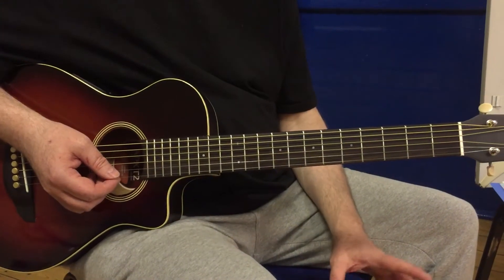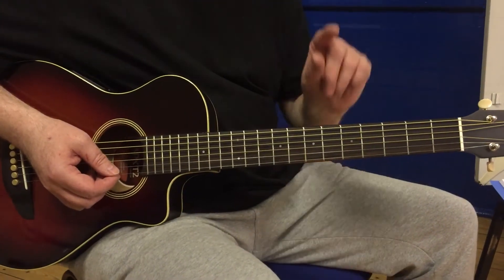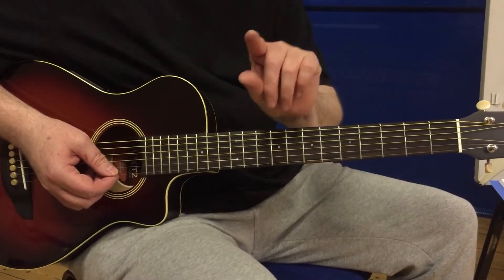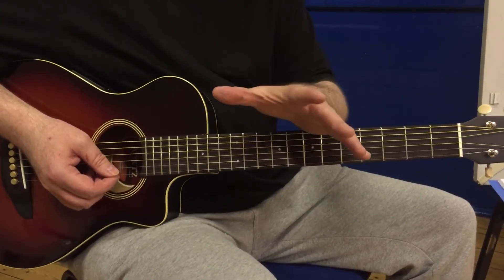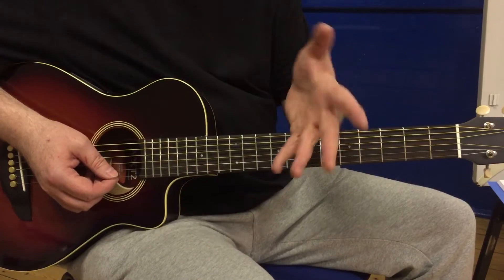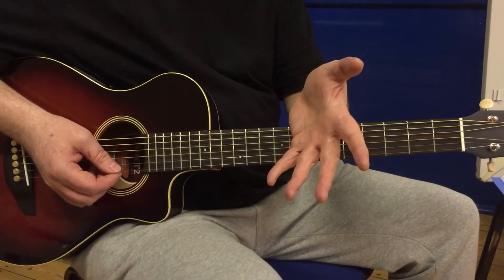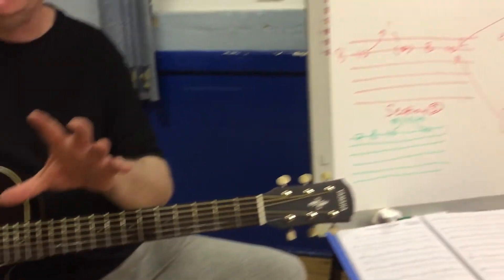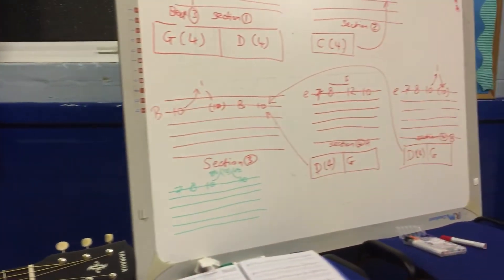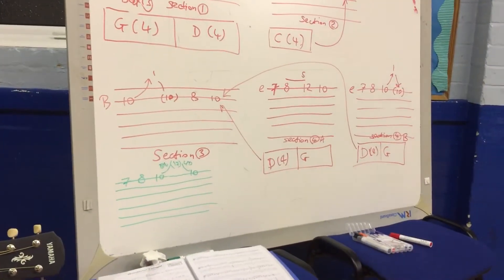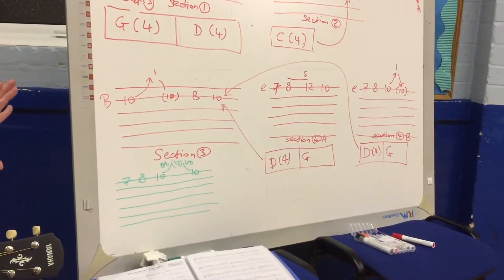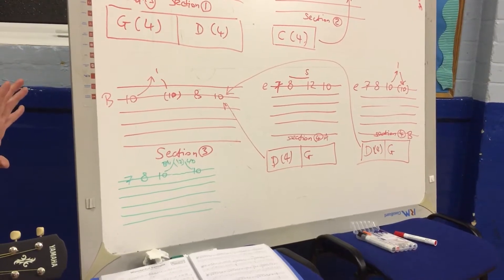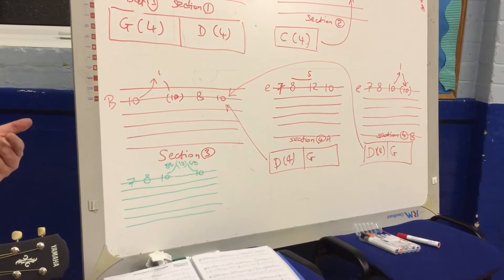And lastly, section four — we're going to do an A and a B. The first one will just be the notes played, and the second one will be with a little kind of Eric Clapton style bend.